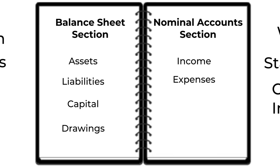To recap: the balance sheet section includes assets, liabilities, capital, and drawings. The nominal account section includes income and expenses. By understanding these two sections, you can easily classify accounts and keep the ledger organized — and that's the first step towards accurate accounting.